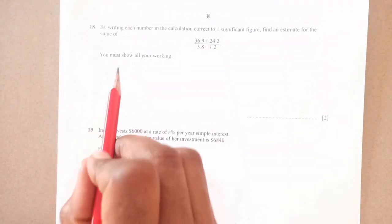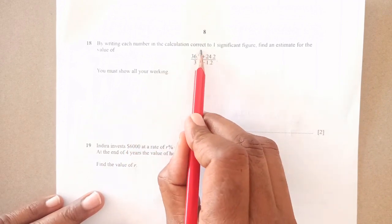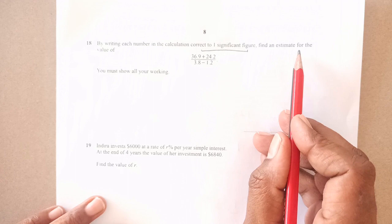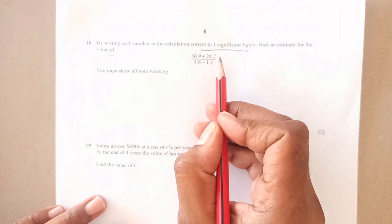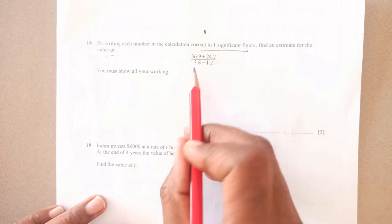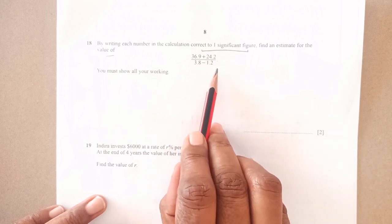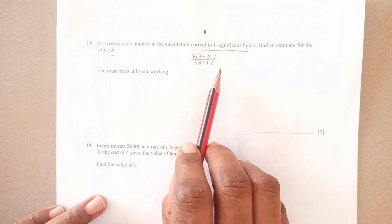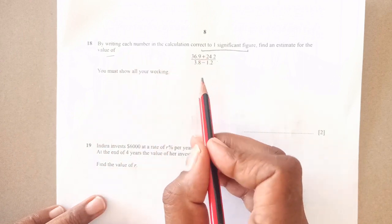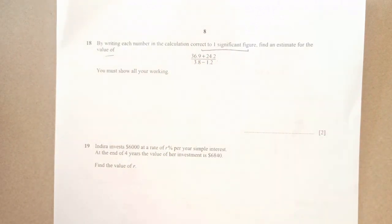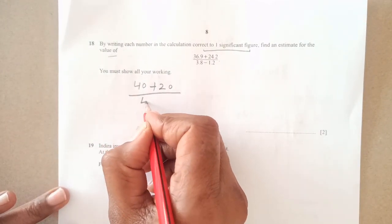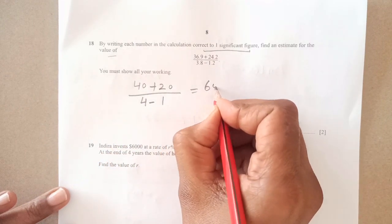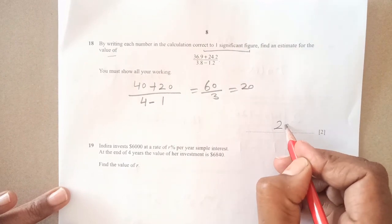Question 18: by writing each number correct to one significant figure, find an estimate for the value. The common mistake students do is they first calculate it, then do the estimation. But here we have to estimate first by writing each number to one significant figure. 36.9 to one significant figure is 40, and 24 is 20, 0.38 is 0.4. So this is 60 over 3, answer is 20.